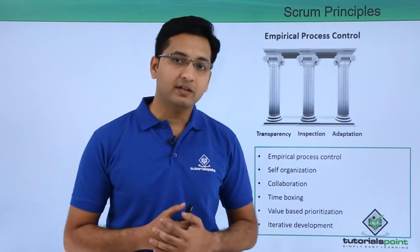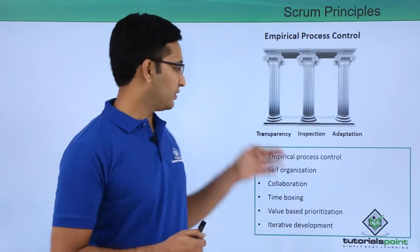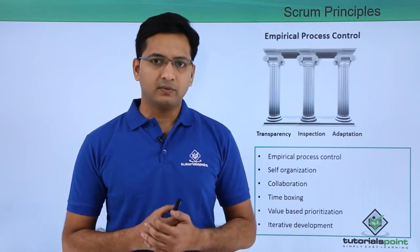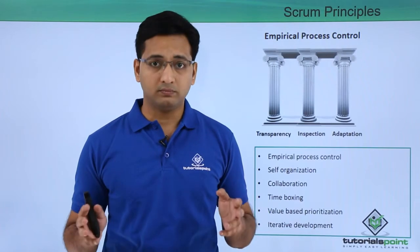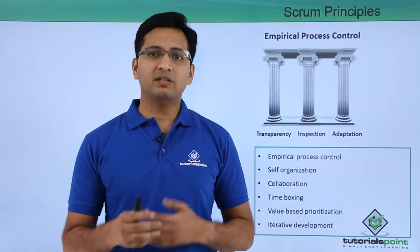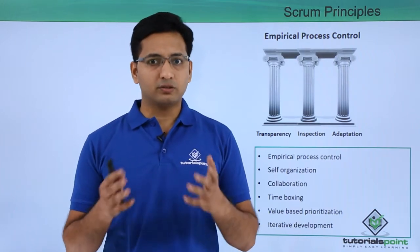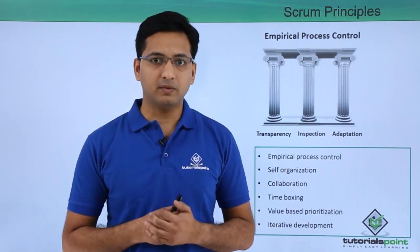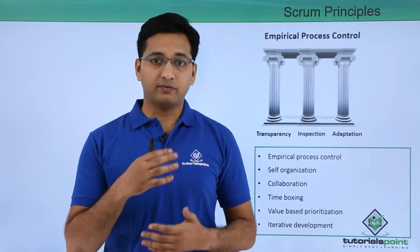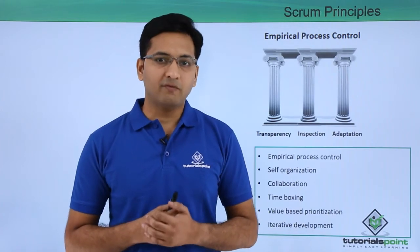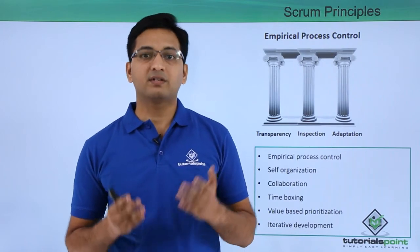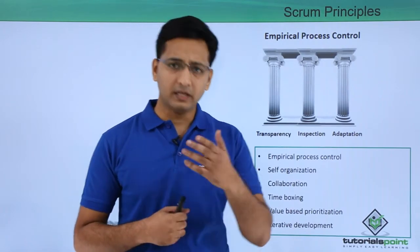There are three pillars of empirical process control. The first one is transparency. Important processes of Scrum are visible to all — by all, I mean all the Scrum team members. This increases trust between each other's work and the progress is clearly visible to everyone in the team. One example of such transparency is the information radiator. In Scrum teams, there is an information radiator in the form of a Scrum board.